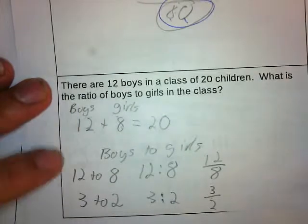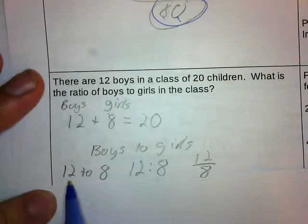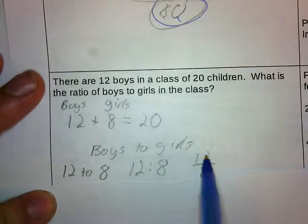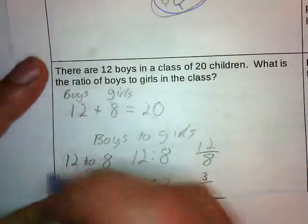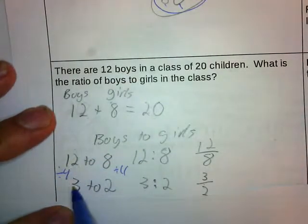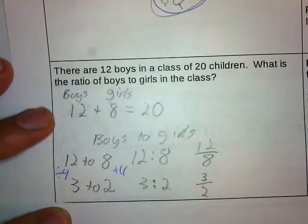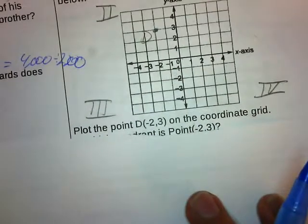We can write this ratio three different ways: 12 to 8, 12 colon 8, or 12 over 8. However, we can simplify these by dividing by 4. 12 divided by 4 is 3, and 8 divided by 4 is 2. So we rewrite each as a simplified ratio. Whenever you have a ratio, you always want to write it in simplest terms.